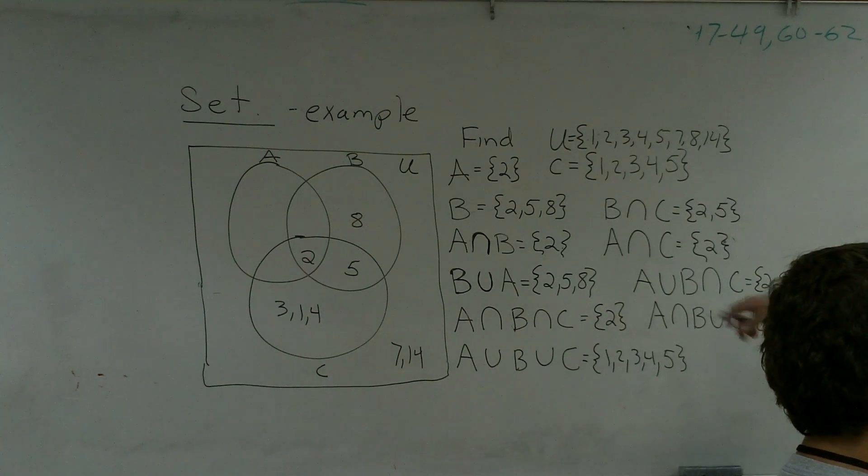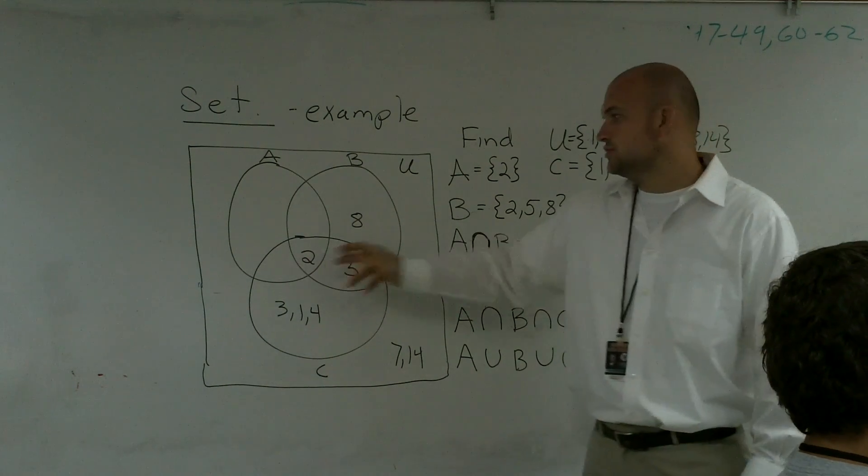Let's go ahead and look at just a couple more. If I say A union B, so what does A, what is A plus B? So that's going to be 2, 5, and 8.